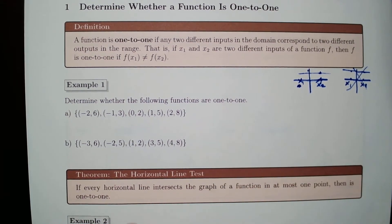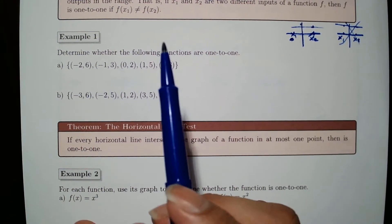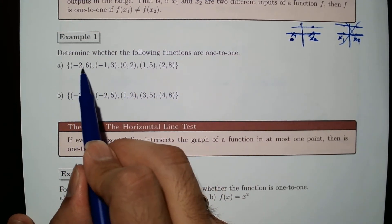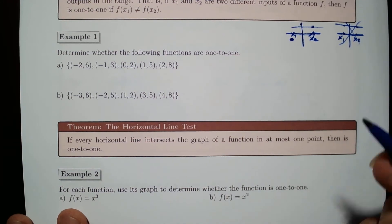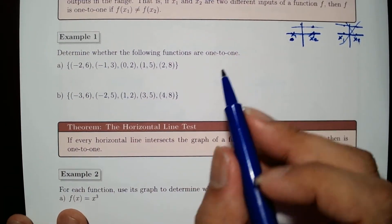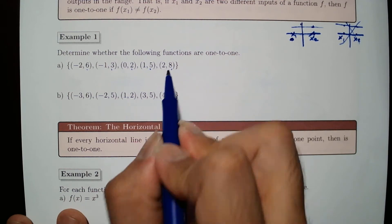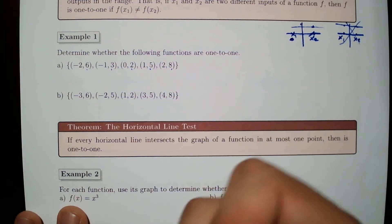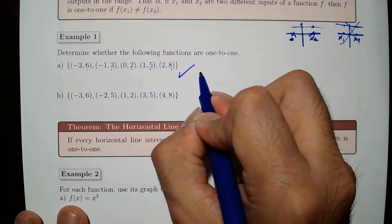Let's look at examples and determine whether these are one-to-one. For number one, the given relation must first be a function — we confirm it is because none of the x-values repeat. Now we observe the y-values: do any outputs repeat? In this case there are no repeated outputs, meaning no two inputs share the same output. So yes, this is one-to-one.